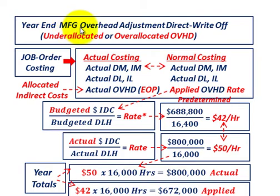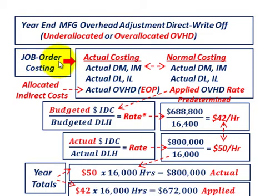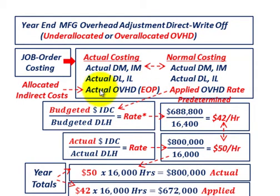What we're going to be going over here is year-end manufacturing overhead adjustment using the direct write-off method. We'd be using this for either under-allocated or over-allocated overhead, related to job order costing. For the year, we use normal costing for job orders and we applied a predetermined or budgeted overhead rate. Now at the end of the year we know what our actual overhead costs are, so we need to make some adjustments between what we budgeted and applied versus our actual overhead.